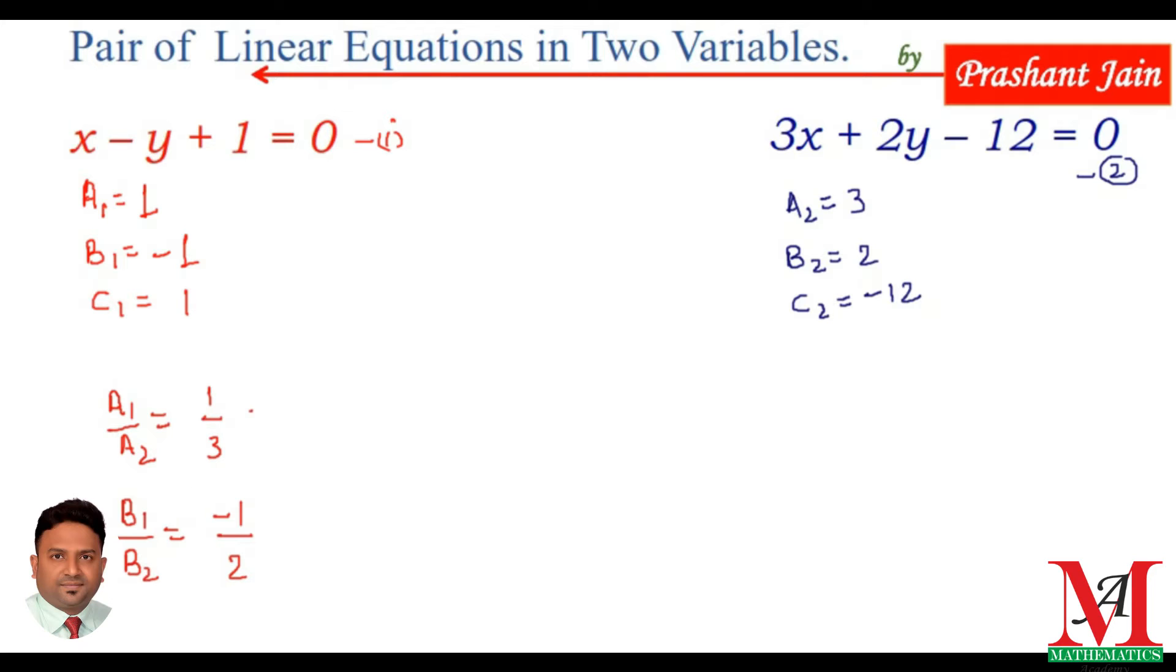Also, we see that the ratios of a1, a2, and b1, b2 are not equal. We can say that a1 upon a2 is not equal to b1 upon b2. It means the equations have a unique solution. It means they intersect at a point.